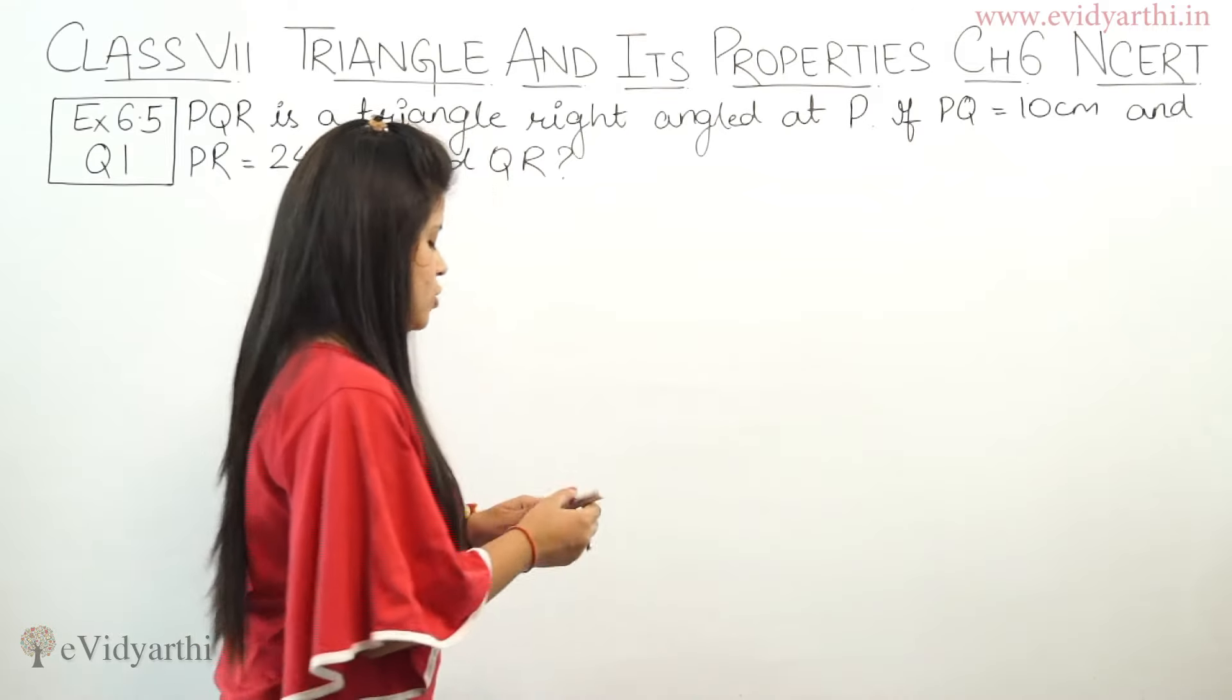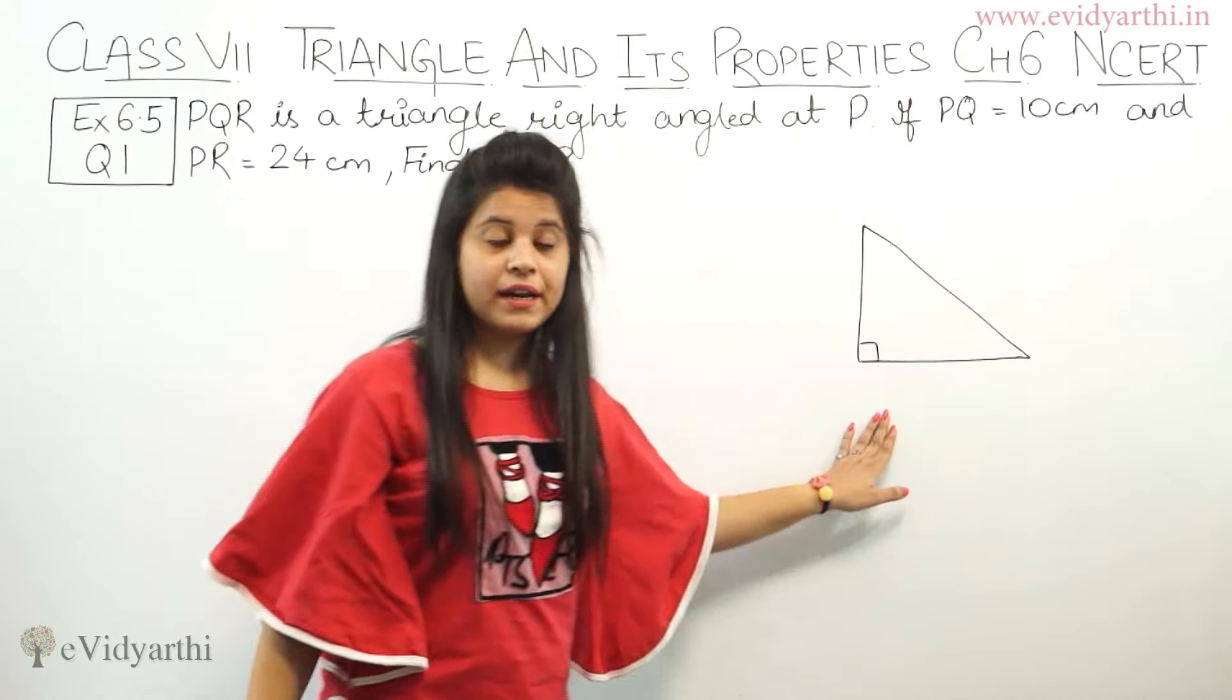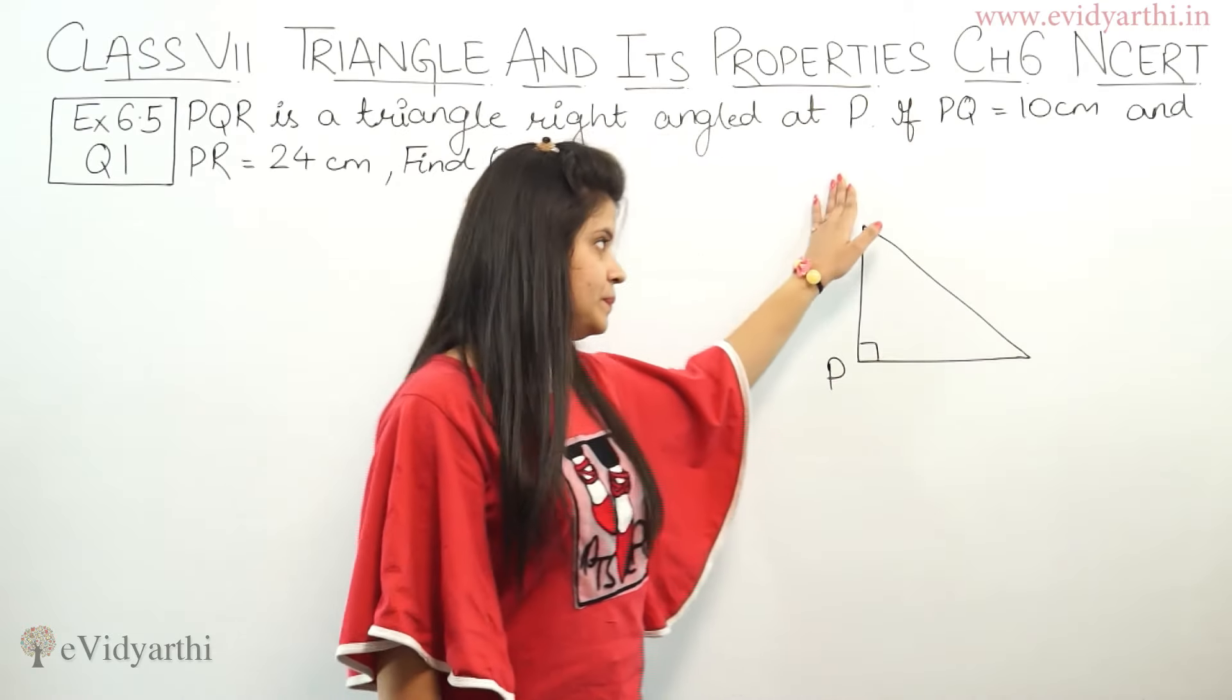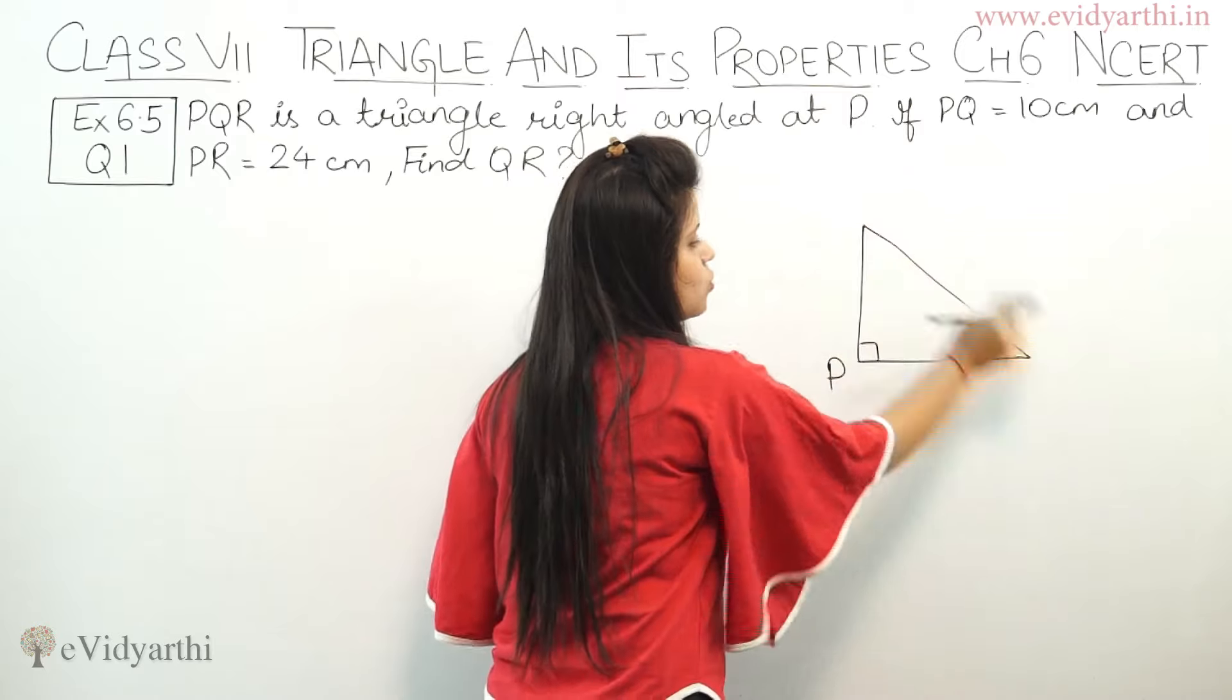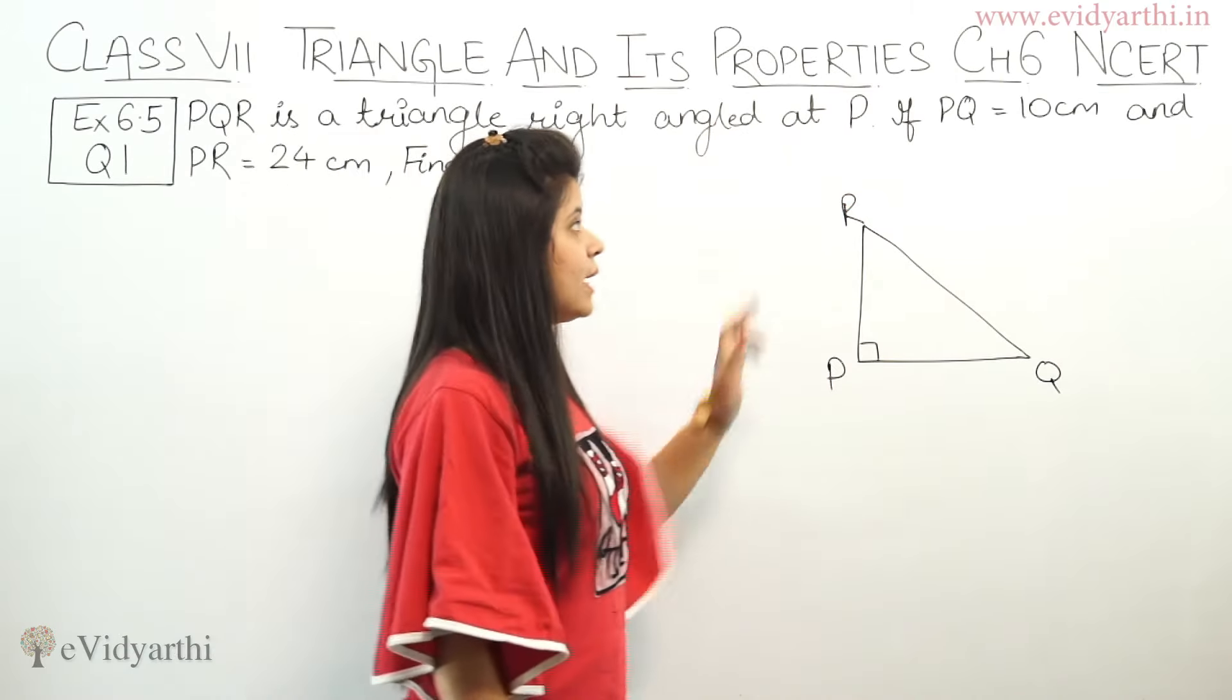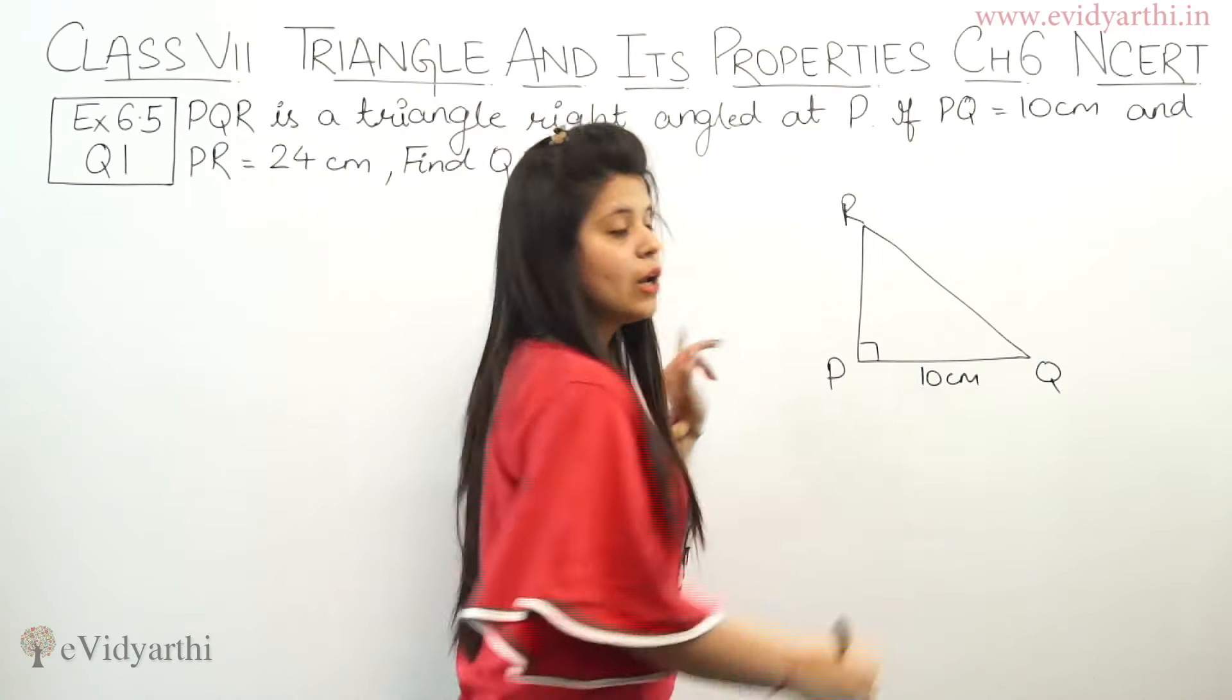If you know that it is a right angled triangle, we will draw a triangle. Here is the 90 degree angle, and here is given right angle at P. That means this point is P. This will be PQR. PQ is 10 cm and PR is 24 cm.